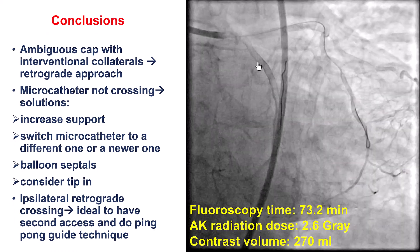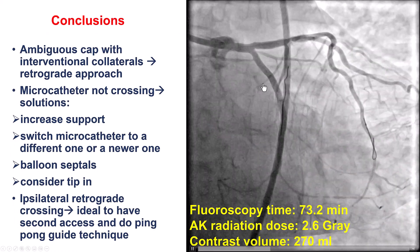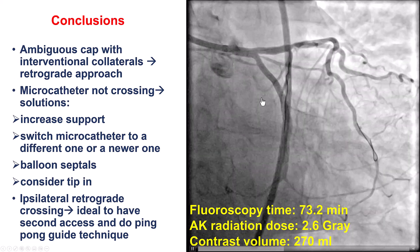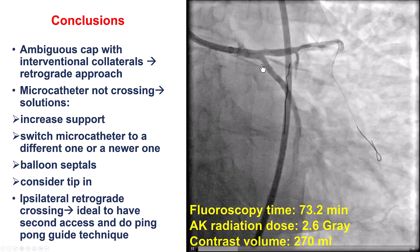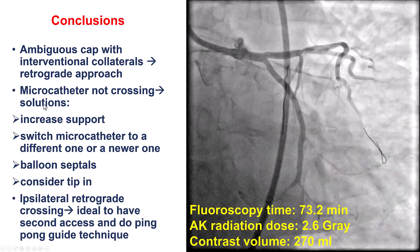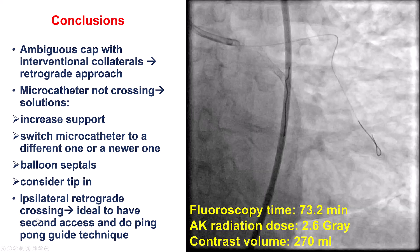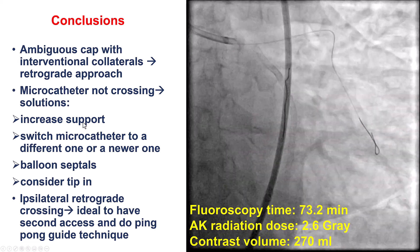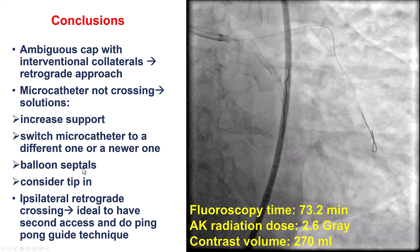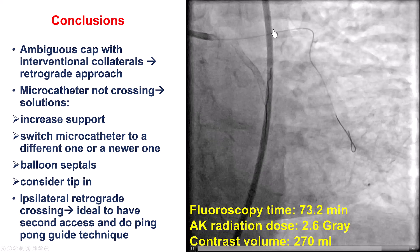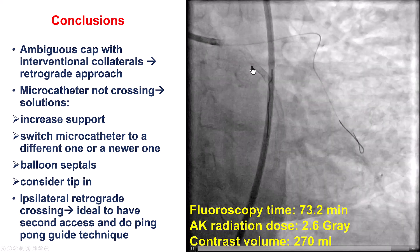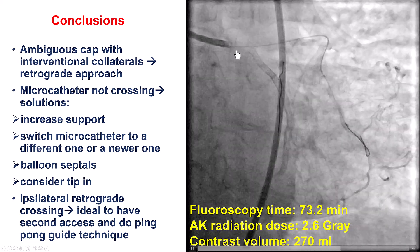This case provided many interesting lessons. First, a primary retrograde approach can be very useful in cases of proximal cap ambiguity — one of three options in the global crossing algorithm, along with IVUS guidance when a side branch is next to the proximal cap, and the move-the-cap technique. When the microcatheter does not cross through the septal, options include changing to a different or new microcatheter, using a guide extension for support, ballooning the septal with a 1.0–1.2 mm balloon, or using the retrograde wire as a marker and target for the antegrade guide wire.